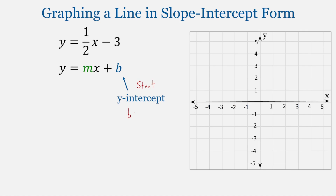Here, b is equal to negative 3. b is our y-intercept, so the ordered pair is going to be (0, negative 3). The x-coordinate for the y-intercept is always going to be 0, since the y-intercept is on the y-axis — we move neither right nor left. So plotting this point, we have (0, negative 3), and that's where we're going to start.